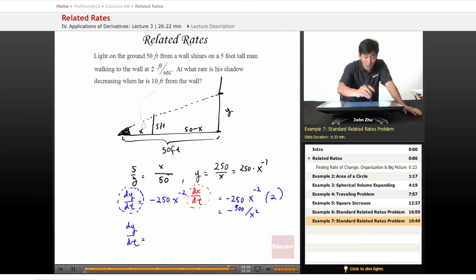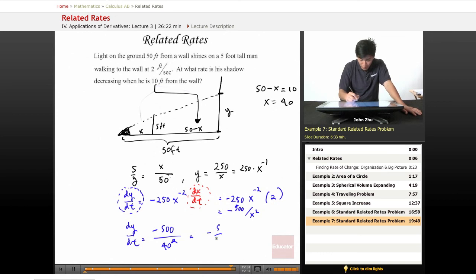So actually, 10 feet is 50 minus x. So we'll have to do a little bit of arithmetic to get x. So 50 minus x equals 10, then x equals 40. So then here we have negative 500 over 40 squared, which means negative 5 over 16 feet per second.